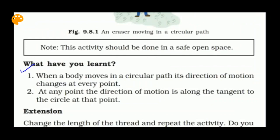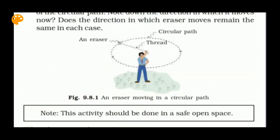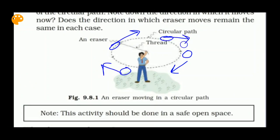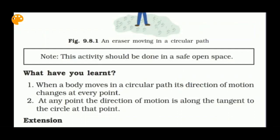Now, observations: what have you learnt from this activity? When a body moves in a circular path, its direction of motion changes at every point. You will notice that the direction of motion of the eraser changes at every point in order to keep it in a circular track.